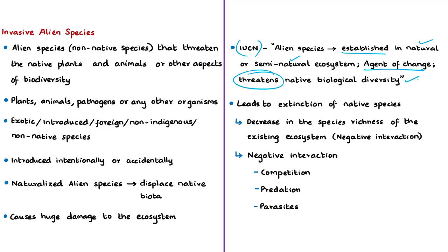One might think that invasive species would increase species richness because they are added to the existing species pool. However, the problem is that invasive alien species displace and lead to the extinction of native species, causing a decrease in the species richness of the existing ecosystem. Overall, there is a negative interaction in the ecosystem leading to decline in native species richness.